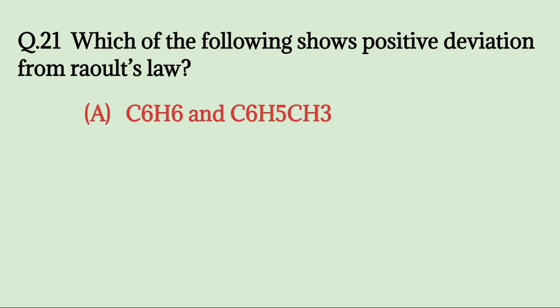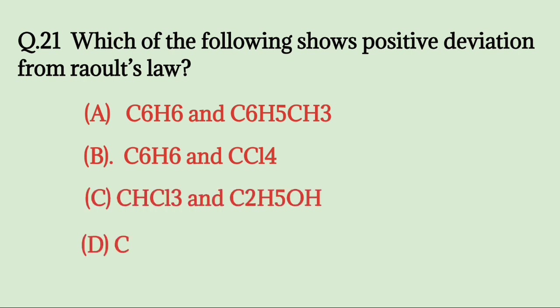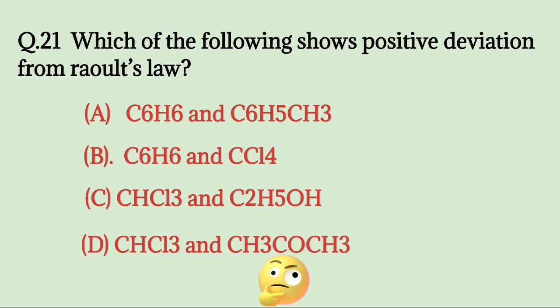Which of the following shows positive deviation from Raoult's law? A. Benzene and toluene, B. Benzene and carbon tetrachloride, C. Chloroform and ethanol, D. Chloroform and acetone. Try to solve it. The answer is chloroform and ethanol.